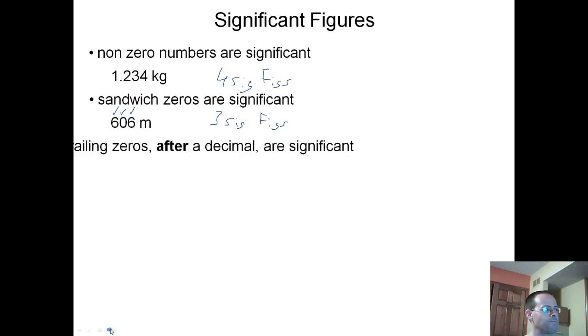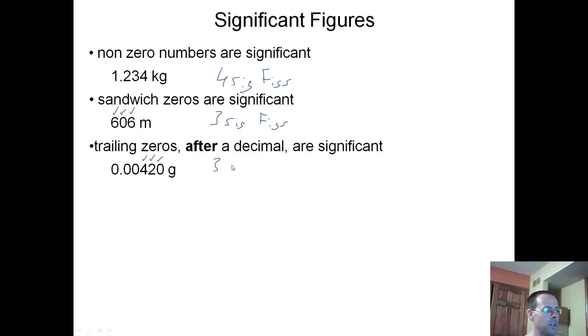Our next rule: trailing zeros after a decimal are significant. By trailing zeros, I mean those zeros at the end. If there's a decimal place, look and see if there's zeros at the end. If there are, we are going to count them as being significant. Here's another number: 0.00420 grams. This is significant, that is significant, and this zero right here must be significant because it's a trailing zero and it's after a decimal place. This number has three sig figs.